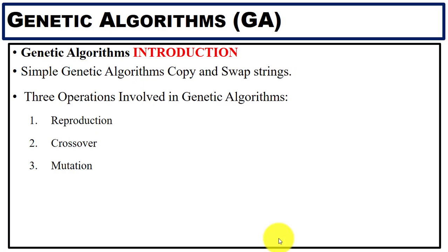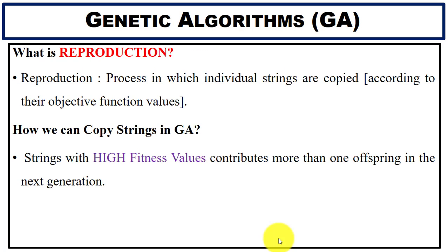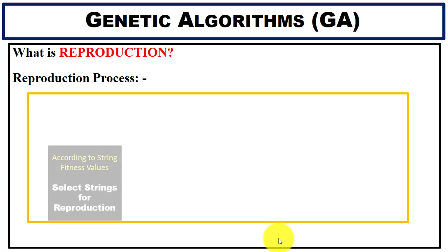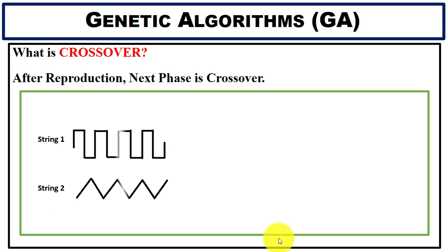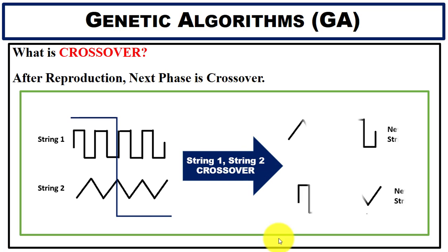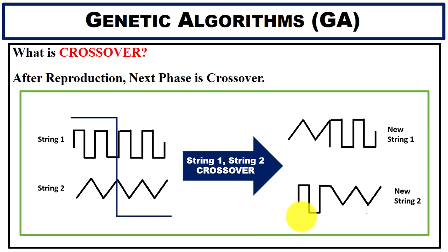The three basic operations in genetic algorithms are reproduction, crossover, and mutation. According to the fitness value we select strings, and with selected strings we can generate a new population — a new generation with new strings. If you have any questions, comment below. Thanks for watching.